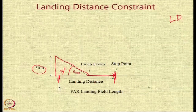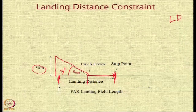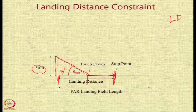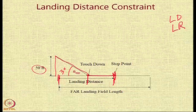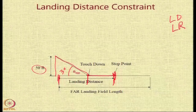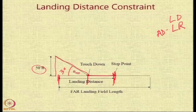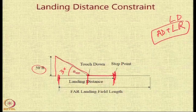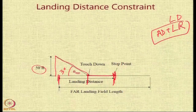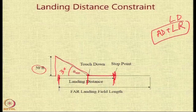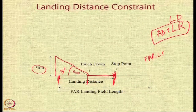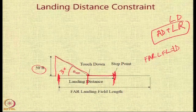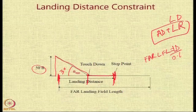LD includes the approach distance plus the landing roll. The distance after touchdown to the stop point is called the landing run or landing roll. So landing distance equals approach distance plus landing roll, and the FAR landing field length equals landing distance divided by 0.667. This margin of 0.667 accounts for pilot flaring techniques, weather conditions, and runway conditions.